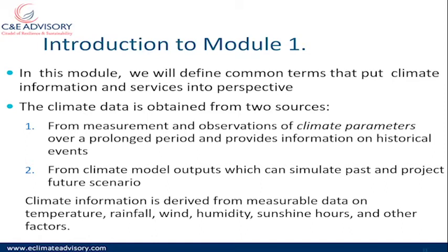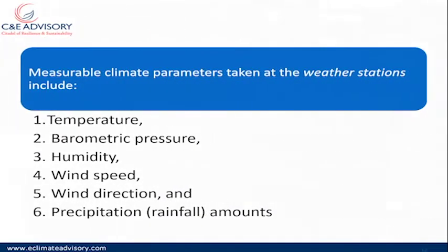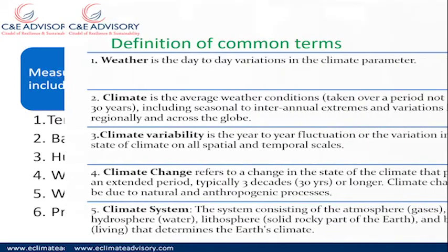Climate information is derived from measurable data on temperature, rainfall, wind, humidity, sunshine hours, and other factors. When we talk about measurable climate parameters taken at weather stations, we focus on the temperature at that particular moment, barometric pressure, humidity, wind speed, wind direction, and precipitation or rainfall amounts. Those are some of the measurable climate parameters.